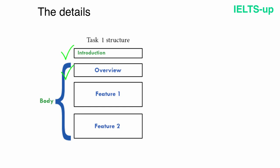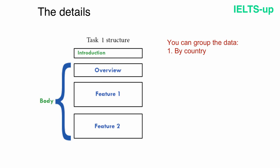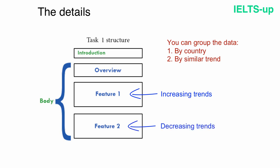After finishing the general overview, you need to give specific details divided into paragraphs. Group your data by some feature — in our case we could group by country or by similar trend. Grouping by similar trend is more logical as it follows our overview, so I will describe the increasing trends of the UK and Germany in one paragraph and the decreasing trend of France in another paragraph.